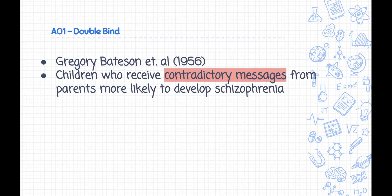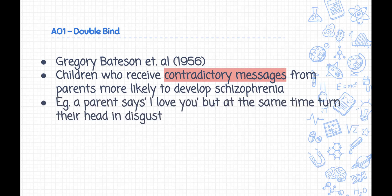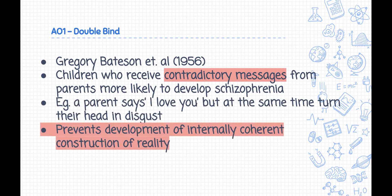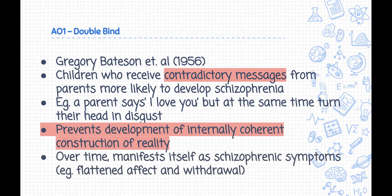He suggested that children who frequently receive contradictory messages from their parents are more likely to develop schizophrenia. For example, parents who say they care whilst appearing critical, or who express love whilst appearing angry. These interactions prevent the development of an internally coherent construction of reality.